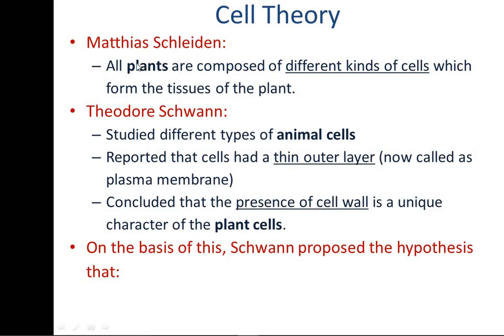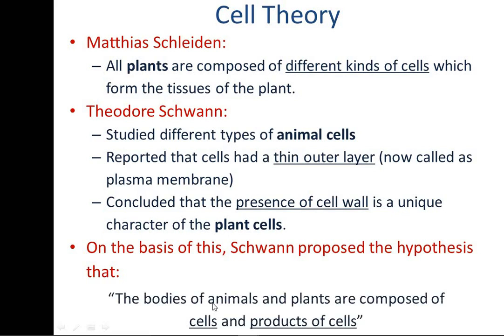Schwann proposed the hypothesis based on Schleiden's observations for plant cells and his own independent discovery for animal cells. What he stated was: the bodies of animals and plants are composed of cells and products of these cells. These products of the cells are important for life — for metabolic activity, regulatory activity, and all cellular functions.